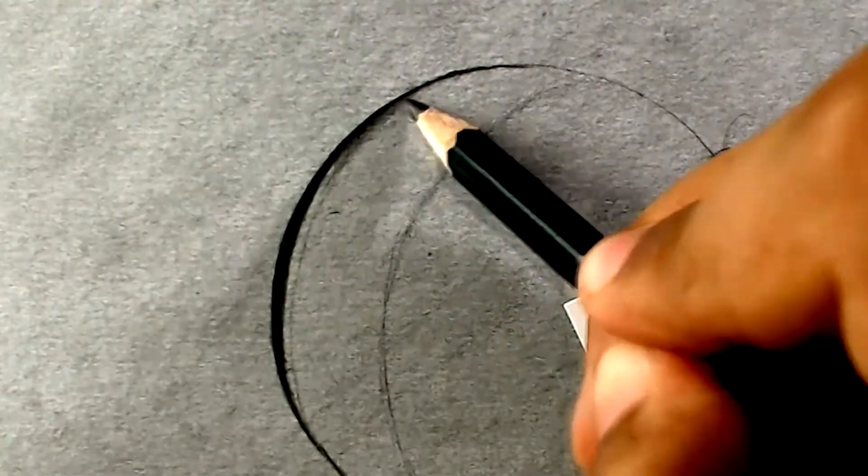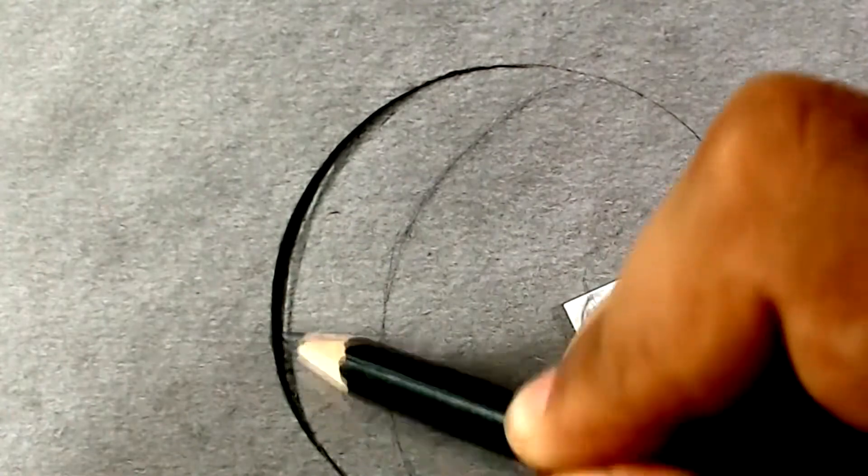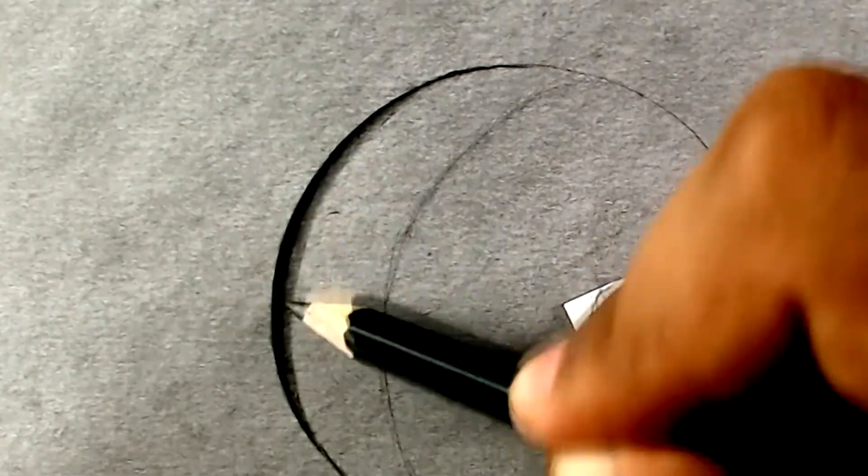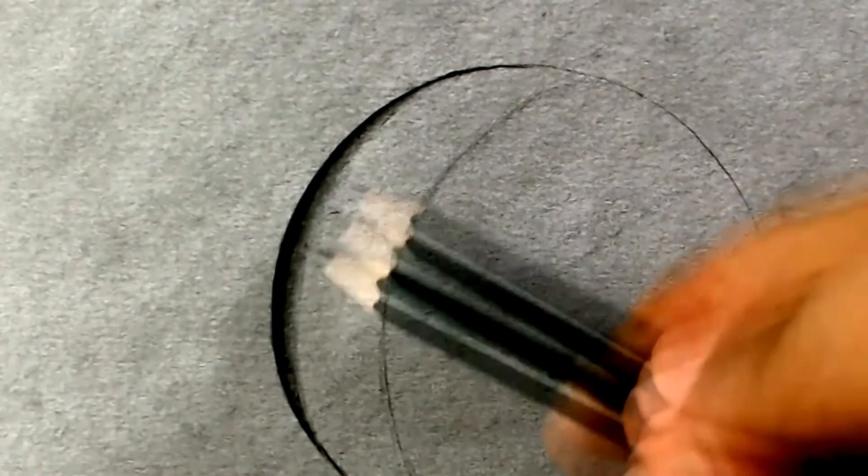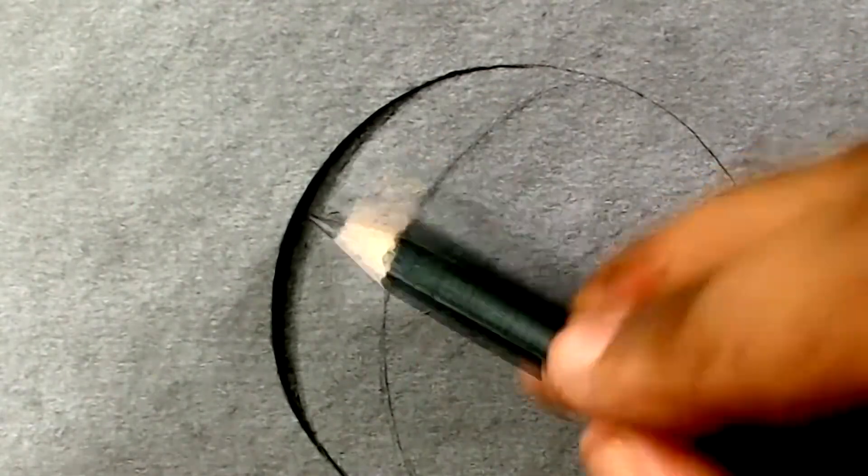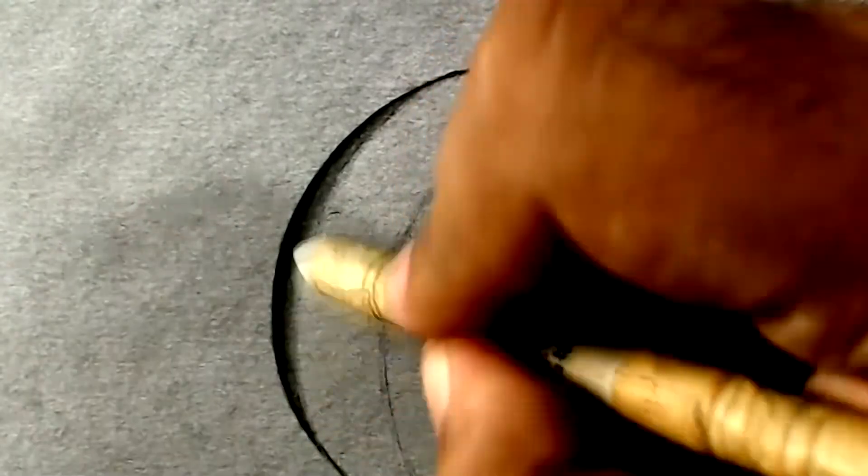After doing this, let's create a transition between that dark part going to the lightest part of the crystal. You just need to adjust the pressure of the pencil to create a really smooth transition, and to mix it even more we use a blending stump.